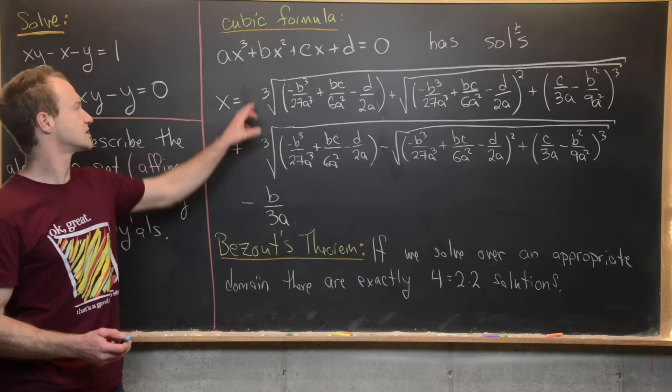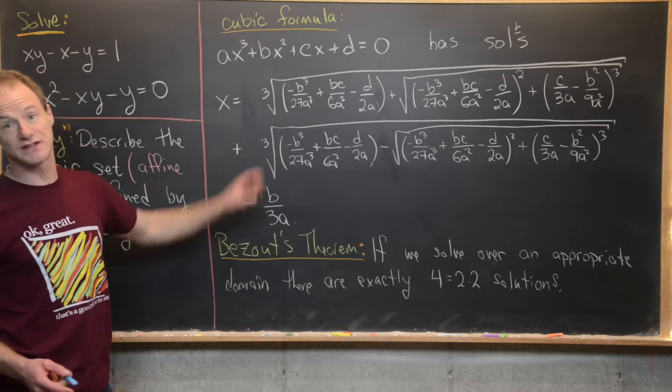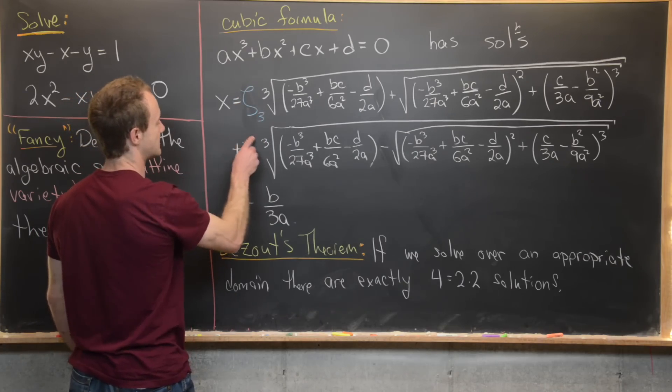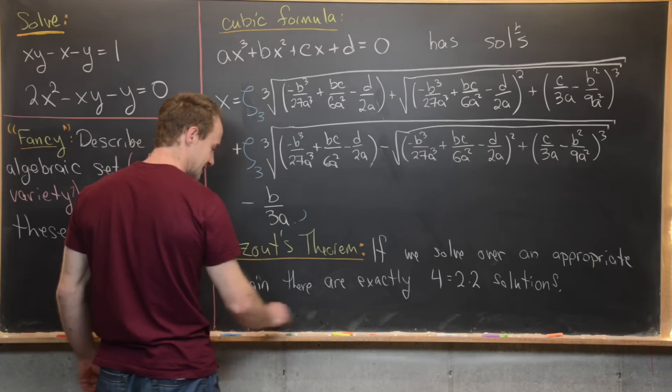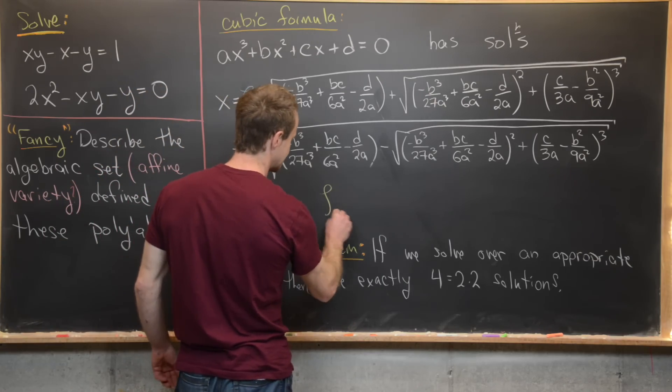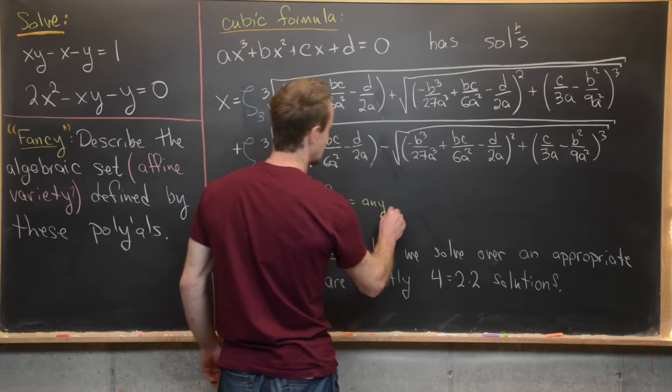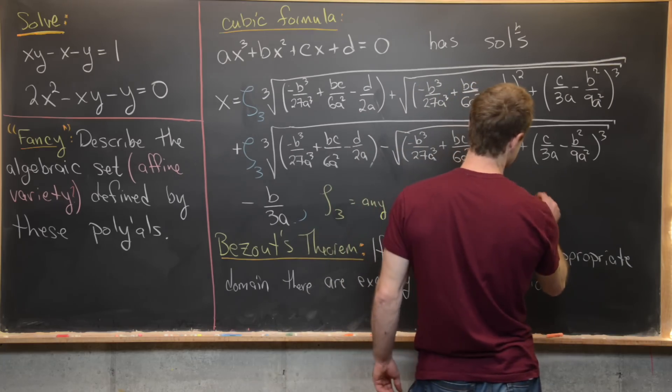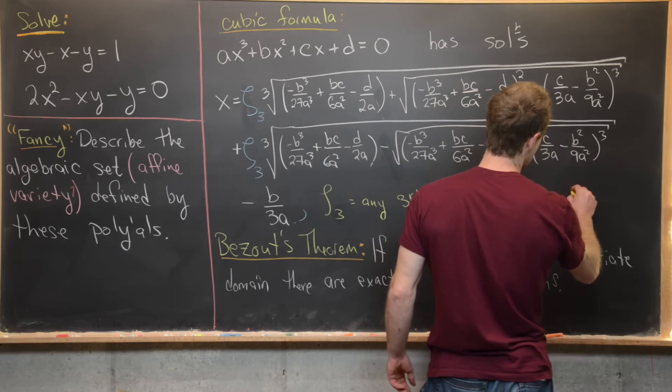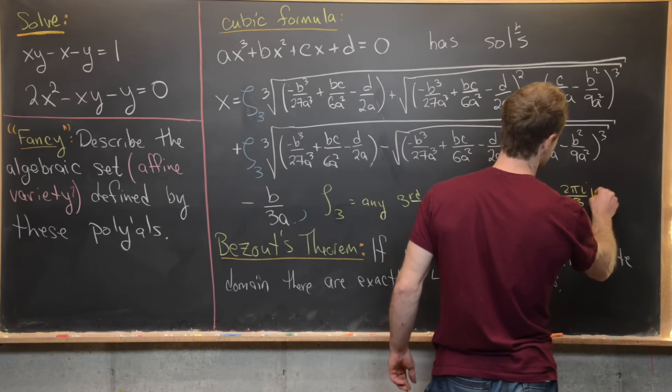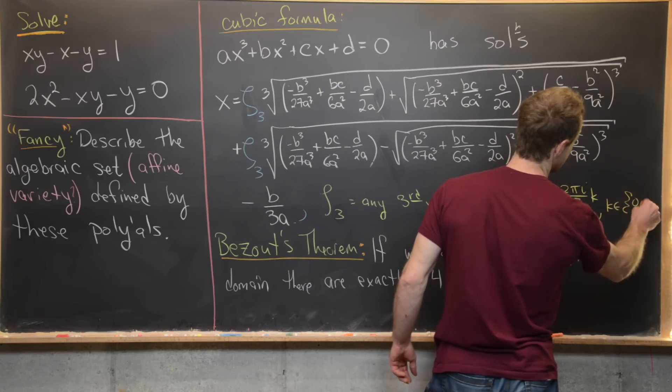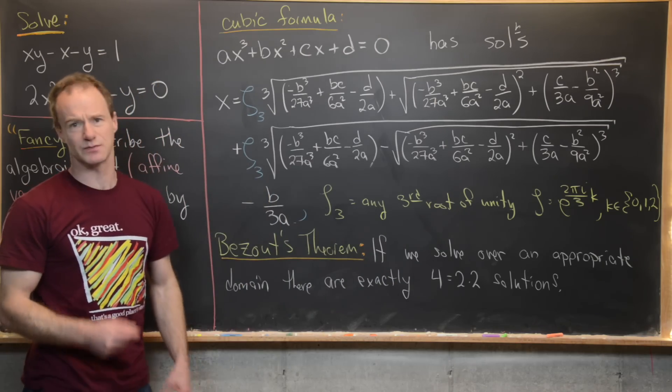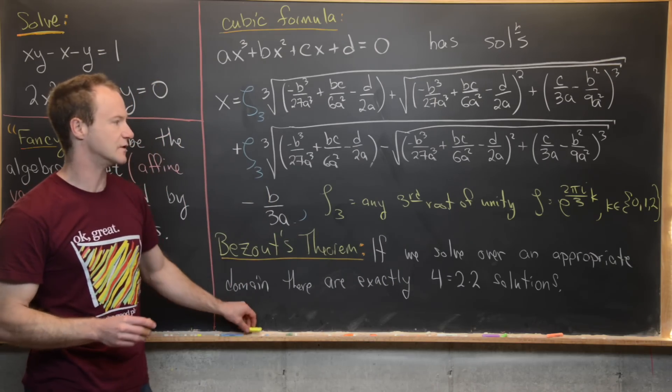Well we can get the other solutions by adding something right here. I guess I should say multiplying something right here. So maybe I'll call it ζ₃, ζ₃. And what do I mean by ζ₃? So ζ₃ is any third root of unity. So that means ζ = e^(2πi/3 × k) where k runs between 0, 1, or 2. Notice if you run it past 2 then you loop back to previous values. So you only need those three values.